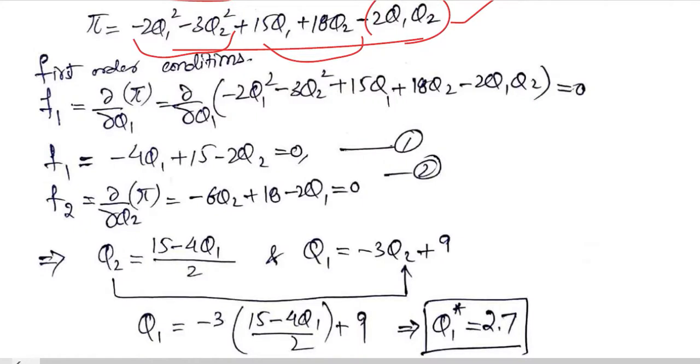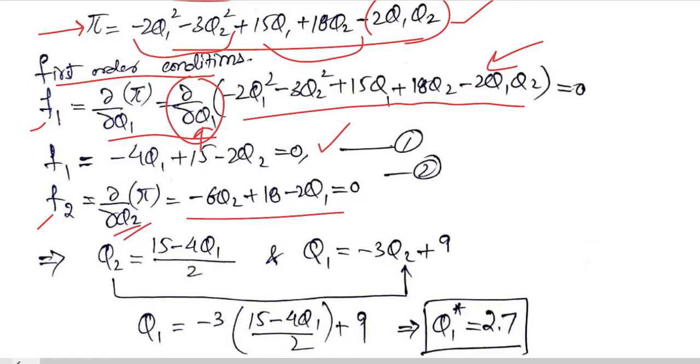Once we have the objective function, we can try to optimize it by using the first order conditions in the first step. F1 and F2 will be calculated. Here in detail it is mentioned how F1 is calculated simply by taking the derivative of this profit function with respect to Q1. This will be the answer, and for Q2 this will be the answer. Simple differentiation is something that you can do here.